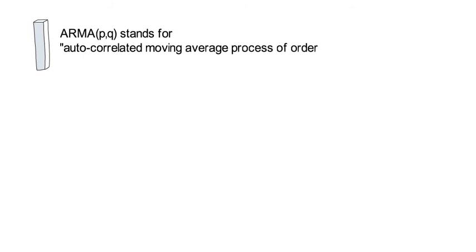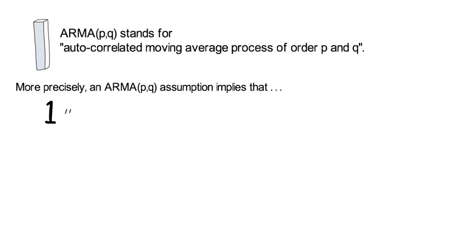Now I want to reveal two observations. First of all, the word ARMA(p,q) stands for autoregressive moving average process of order p and q. More precisely, an ARMA(p,q) assumption for rt implies that μt-1 depends linearly on the past p realized returns and on the past q forecast errors.